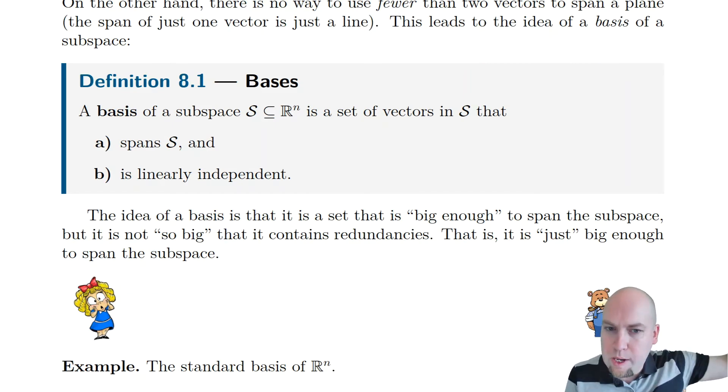If you throw anything away, you're going to make its span strictly smaller. That's the idea behind linear independence. So you throw these two ideas together and you get exactly what we talked about. It spans the entire subspace, but also there's no redundancies. It's as small as possible. If you throw anything away, you're changing the subspace that it spans.